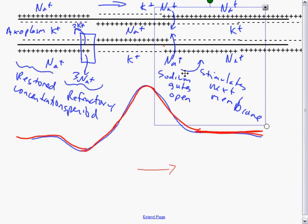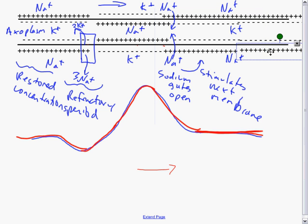So in this section of the membrane, the sodium gates would then start to open. Sodium would flood in and that would trigger a depolarization on the next section of membrane. So depolarization of one section of the membrane causes depolarization of the next section of the membrane and then that moves down the neuron.